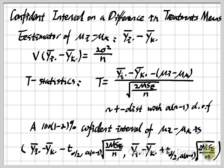When we plug in the data, we compute sample means y-bar i dot and y-bar k dot, look up the t-table value, and plug it into the confidence interval equation. One very important thing to remember: inside the square root there is a 2 in the numerator. From my experience, many students forget this 2 when using the calculator, even if they wrote down the formula correctly. Please remember this. This is how we find the confidence interval for the difference of treatment means.